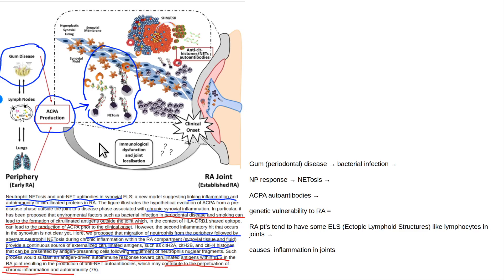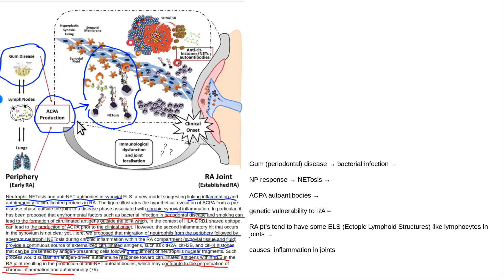Weston Price was a dentist in the 1920s and 1930s who traveled the world visiting traditional populations. He found they had good teeth, but once they moved to modern areas and started eating sugar, white bread, and flour, they developed cavities and dental problems. If you eat old-fashioned, single-ingredient whole foods and keep your teeth clean — especially at night when saliva production decreases — you can prevent this inflammation and help prevent autoimmune diseases like rheumatoid arthritis.